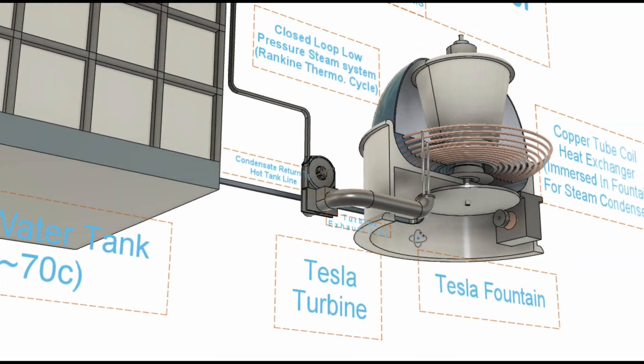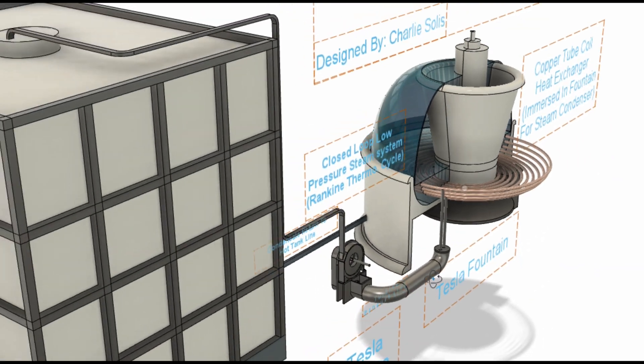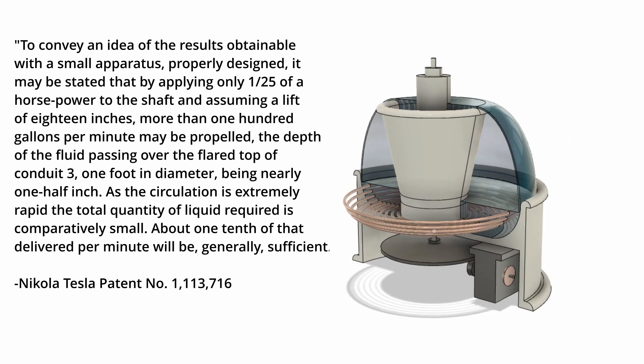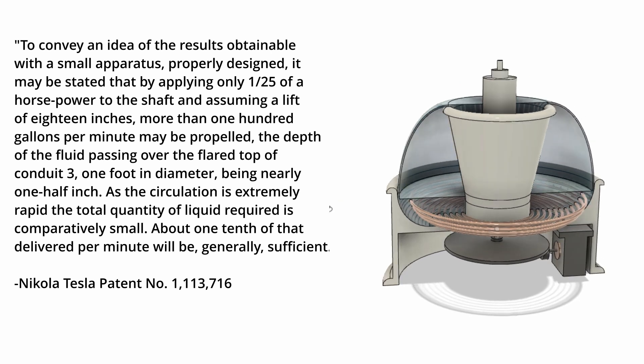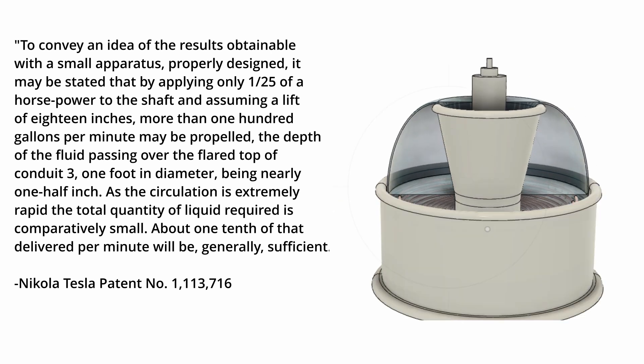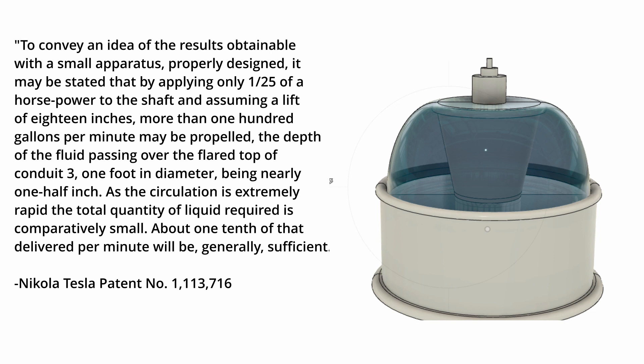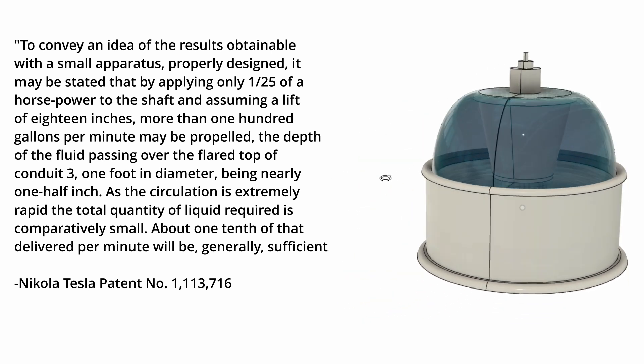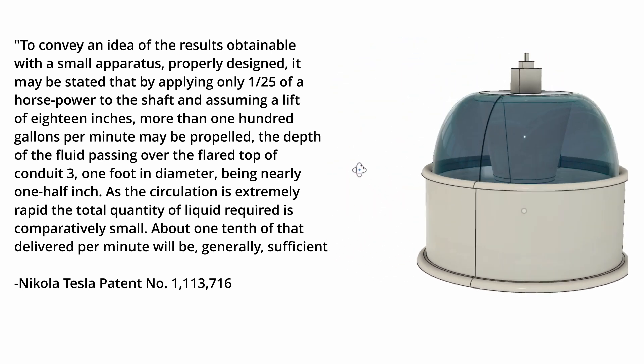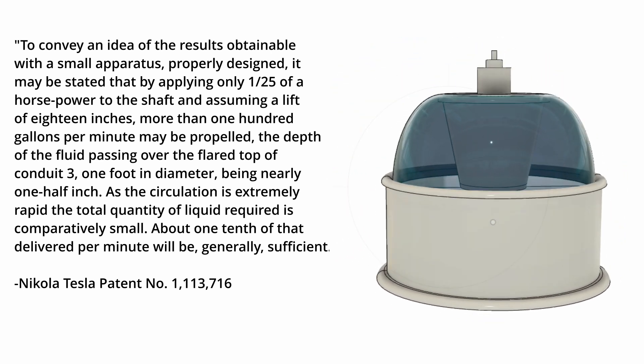The next quote from the patent that I would like to share is about the power requirements for operating the fountain itself. Tesla is quoted as saying, To convey an idea of the results obtainable with a small apparatus properly designed, it may be stated that by applying only 1/25th of a horsepower to the shaft and assuming a lift of 18 inches, more than 100 gallons per minute may be propelled. As the circulation is extremely rapid, the total quantity of liquid required is comparatively small. About 1/10th of that delivered per minute will be generally sufficient.